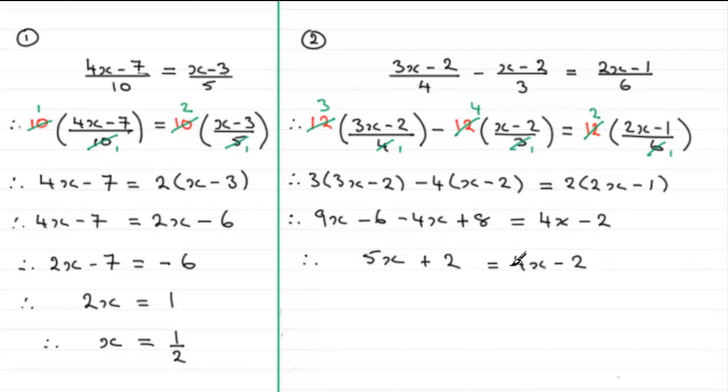Now I'm going to subtract 4x from both sides so therefore 5x take 4x leaves me with x plus 2. And if I subtract 4x from the right hand side we're just left with minus 2. And next I'm going to subtract 2 from both sides and that leaves me with x on the left hand side and on the right we've got minus 2 minus another 2 which is minus 4.